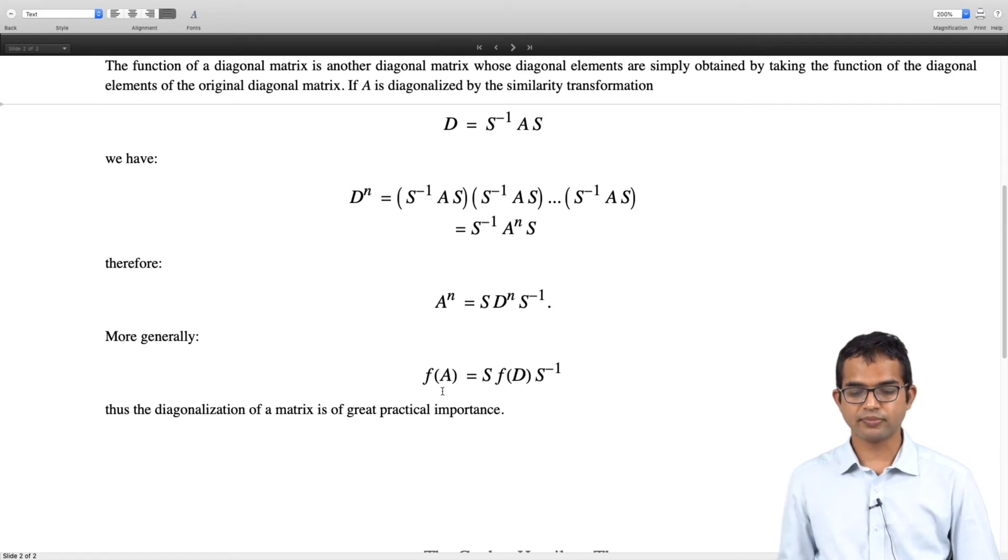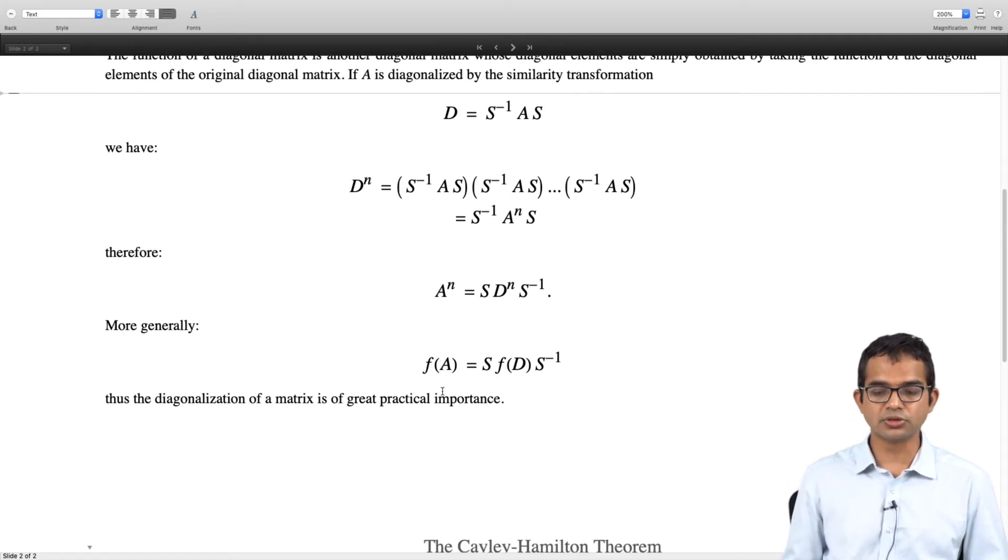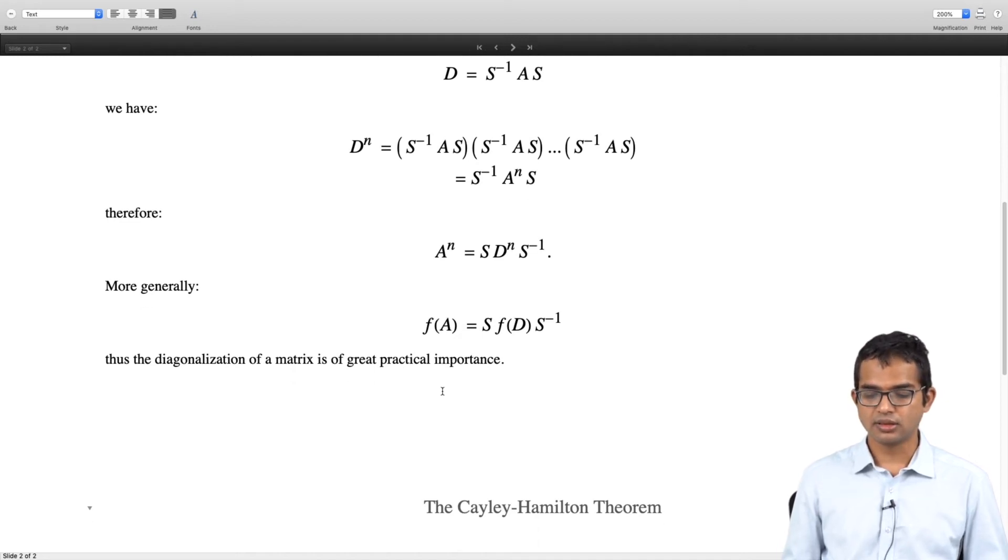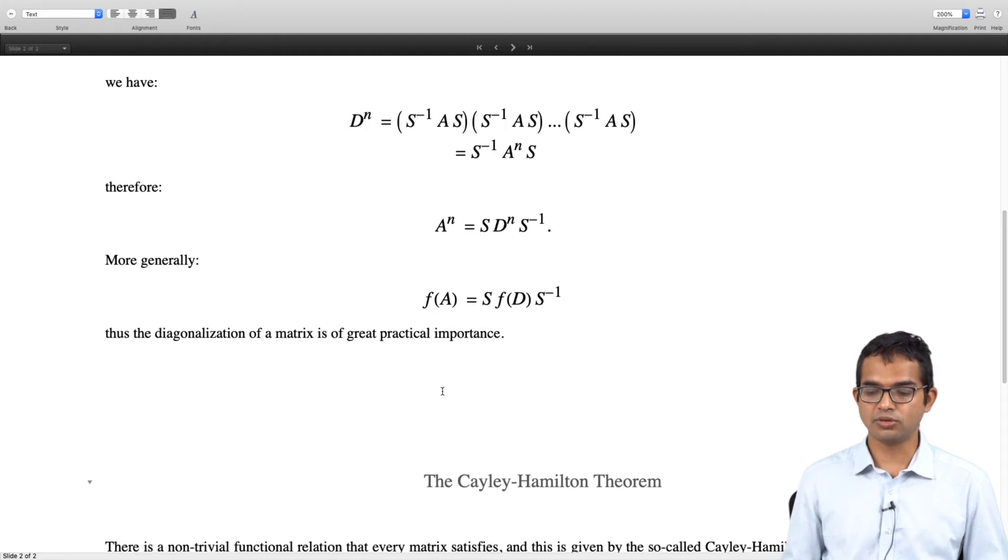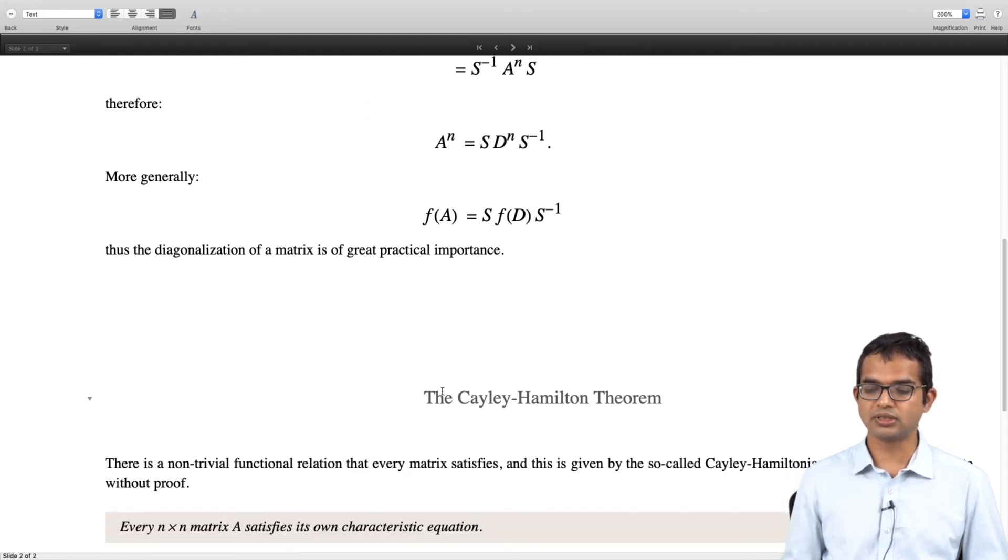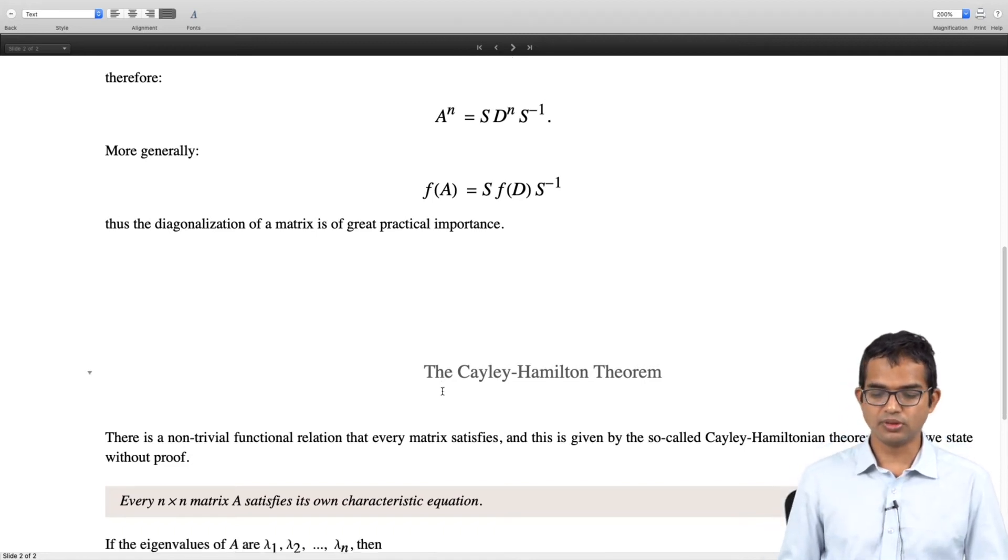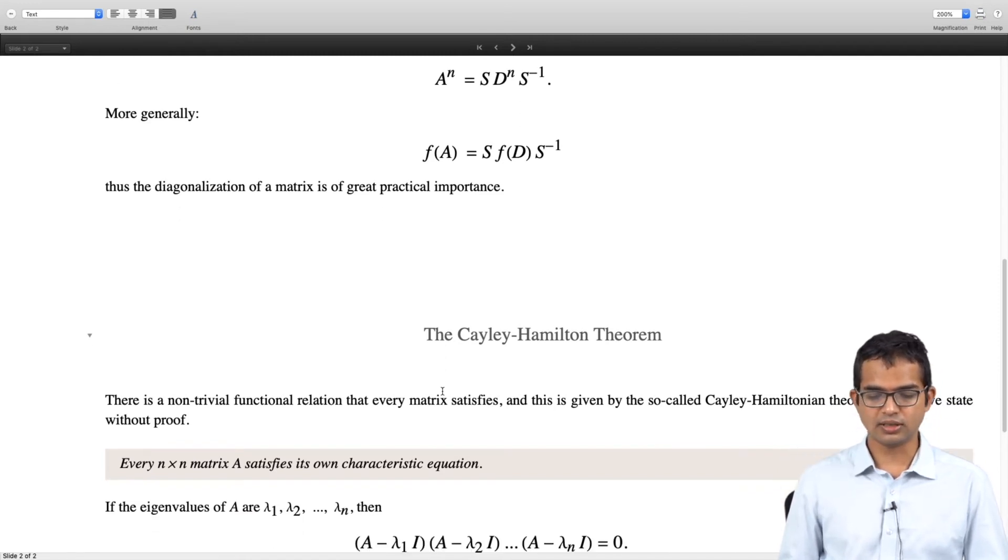So now let us look at a special kind of function which is associated with any matrix and that leads us to this theorem called the Cayley-Hamilton theorem, which is a non-trivial theorem that says basically that every matrix satisfies its own characteristic equation. Very simple to state and fairly easy to understand, but it is a non-trivial theorem. Of course we are not going to prove it. So what is the characteristic equation? It is just determinant of A minus lambda I equals zero.